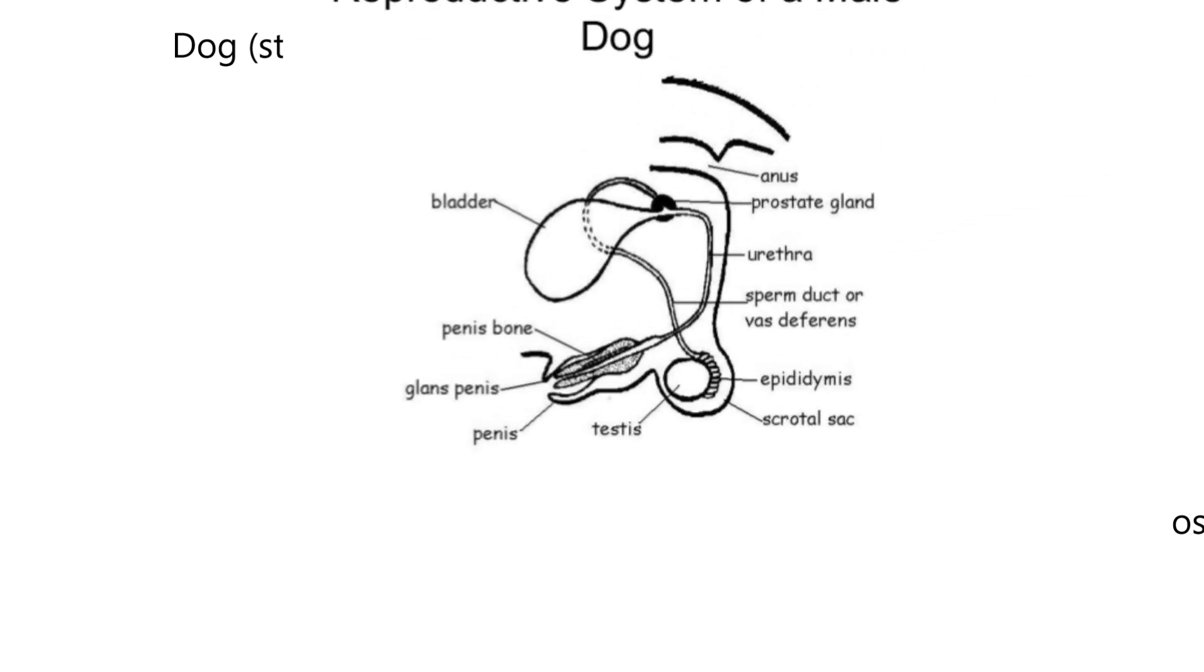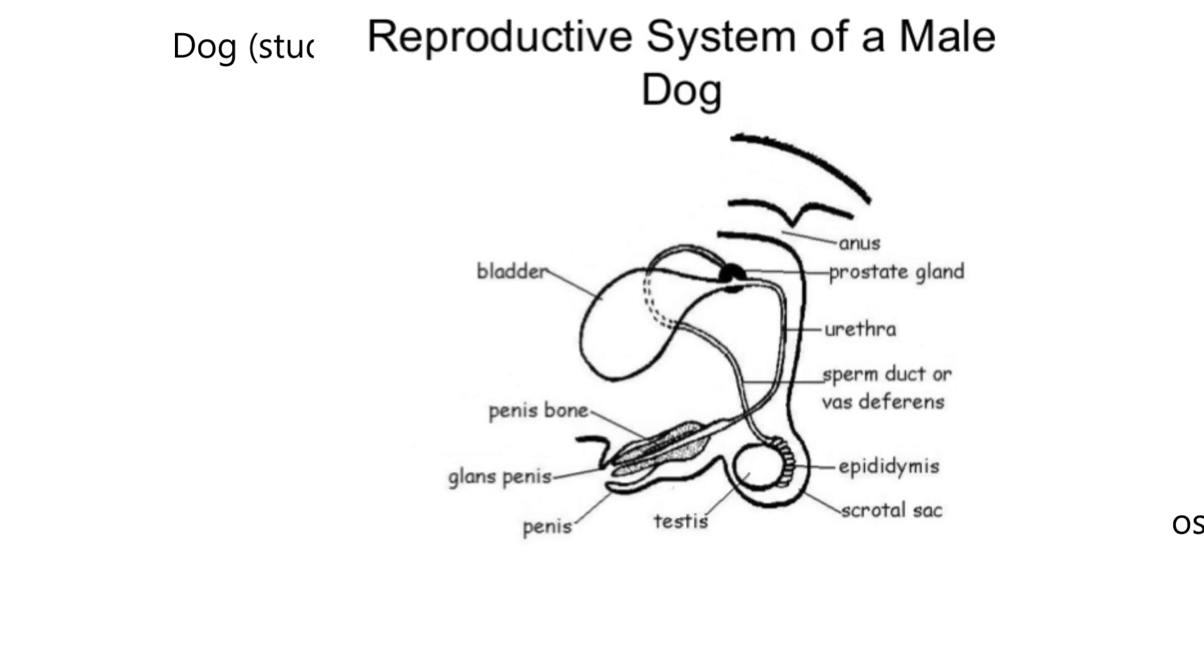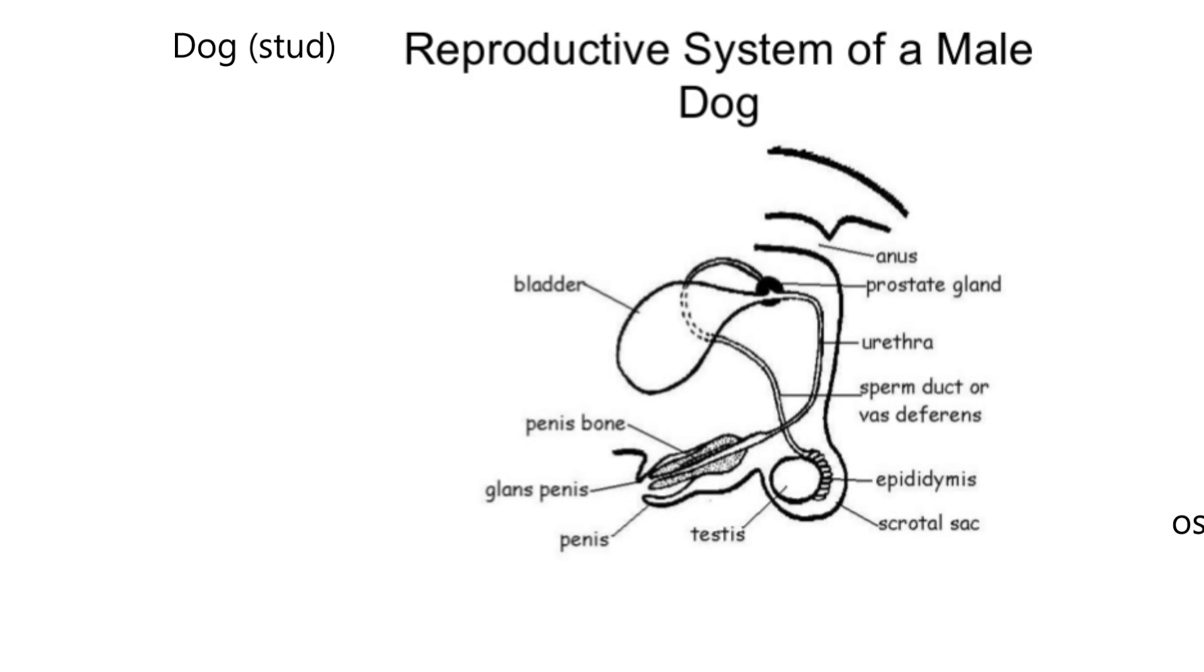Now I'd like to show you the dog, male dog reproductive tract that somebody has drawn and labeled. This is cranial, this is caudal. There's the testis, they've got it labeled singular. Epididymis, the scrotum, the vas deferens, they're also calling that the sperm duct. They got the urethra right. There's the prostate gland, the bladder. The penis has a bone in it, they've labeled it penis bone. Oftentimes it's called the os penis.